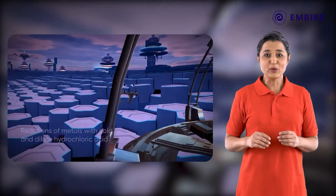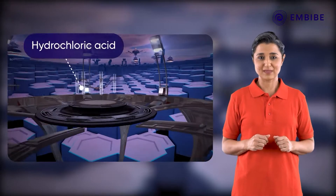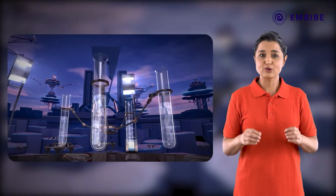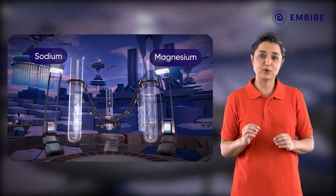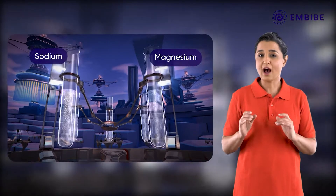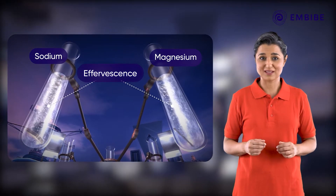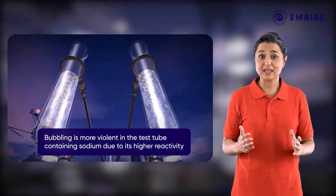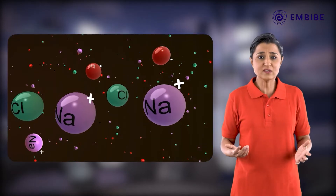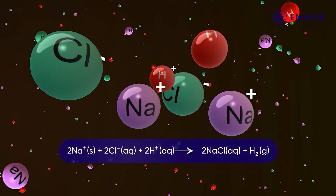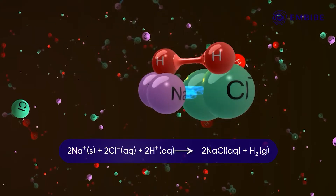Lastly, we shall discuss the reaction of metals with cold dilute hydrochloric acid. Drop a small piece each of sodium and magnesium into two separate test tubes filled with dilute hydrochloric acid. We can see effervescence in both test tubes. However, the bubbling seems more violent in the case of sodium, indicating its higher reactivity. Sodium reacts vigorously with hydrochloric acid to form hydrogen gas, which causes effervescence.